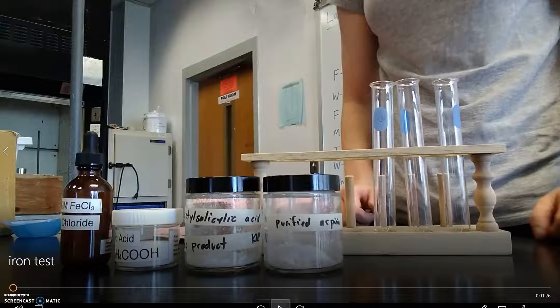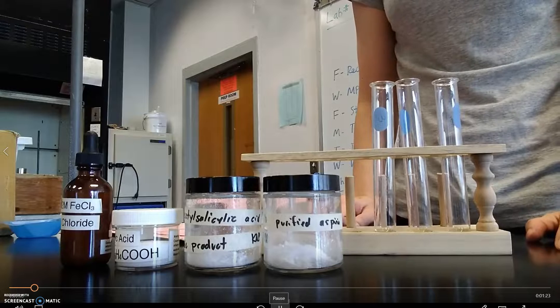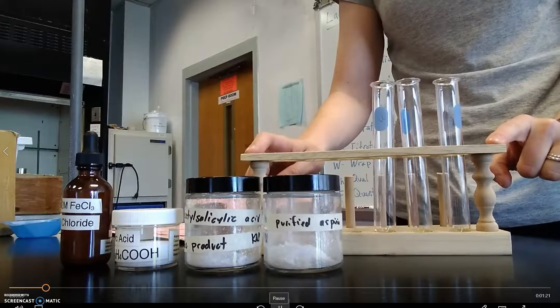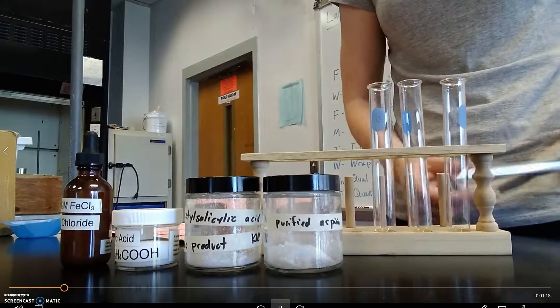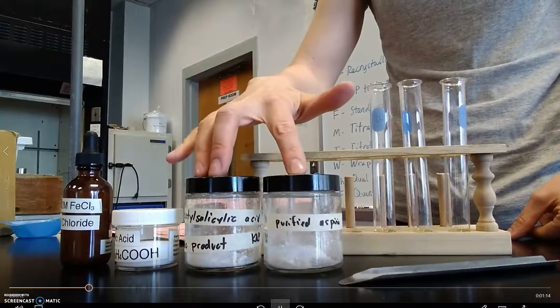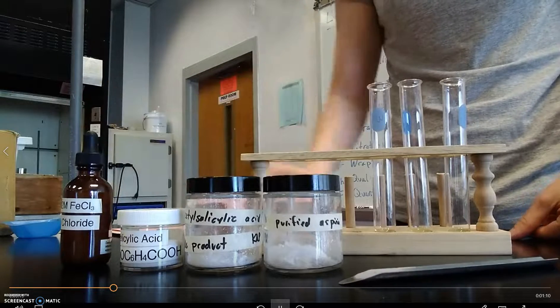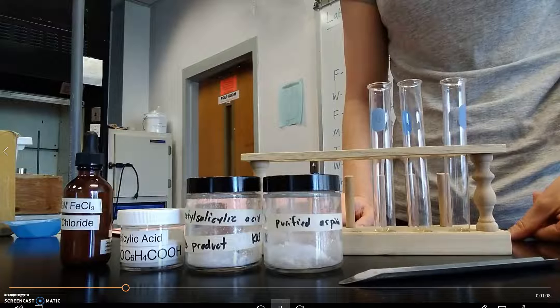The first one we're going to talk about is the iron test. For this test you're going to need a test tube rack and three test tubes, clean but not necessarily dry. You'll need a spatula or a micro spatula, and we're going to analyze both the aspirin products you synthesized as well as reagent grade. We're going to be testing them with a solution of iron chloride.